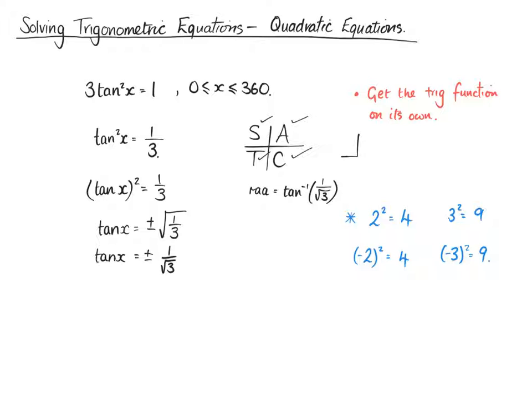Whenever you see the square root of 3, you should be thinking 1, 2, square root of 3, this triangle. So tan is opposite over adjacent, so that means we're going to have 30 degrees. So that means for x we are going to get 30 degrees, 180 minus 30 degrees, 180 plus 30 degrees, and 360 take away 30 degrees. So we're going to get 30, 150, 210, and 330.